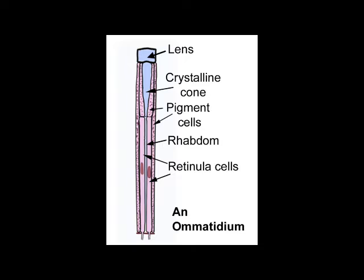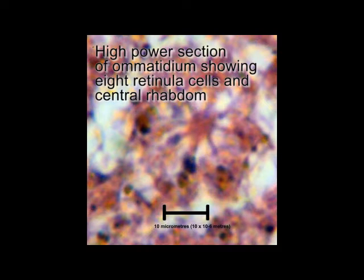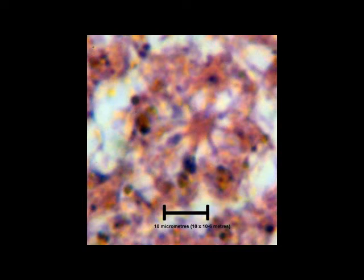The light passes down the narrow centre, known as the rhabdom, between long thin cells known as retinular cells. Eight retinular cells surround the rhabdom, with a ninth cell also present at the lower end of the ommatidium. The structure of the rhabdom is quite complex. Each of the eight retinular cells has microscopic projections which pass into the rhabdom, so that the rhabdom consists of a mesh of these projections overlapping each other.